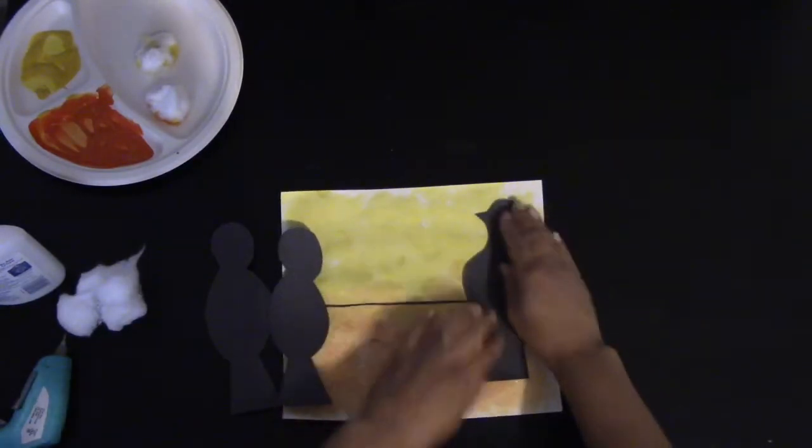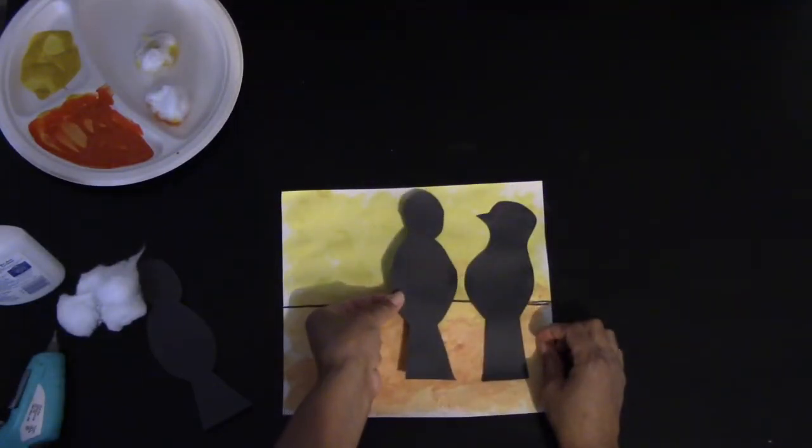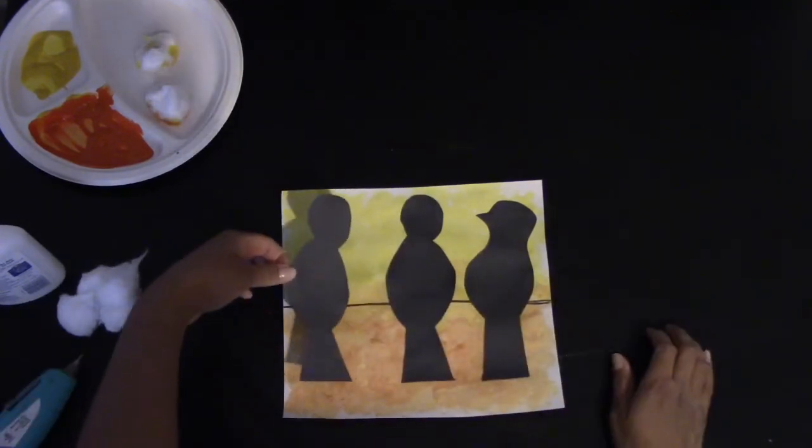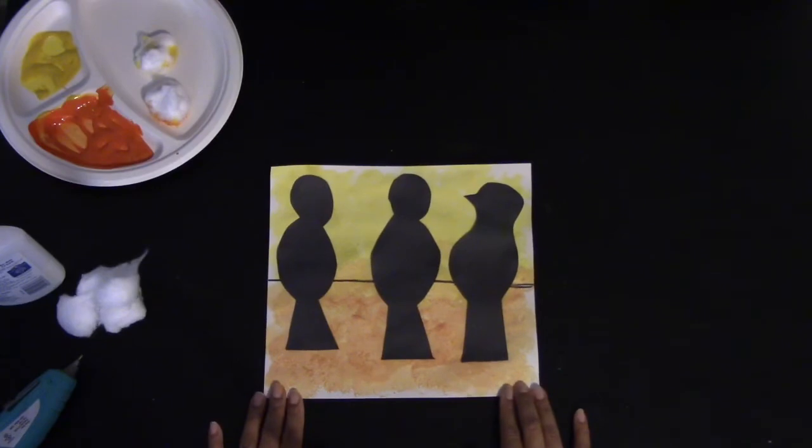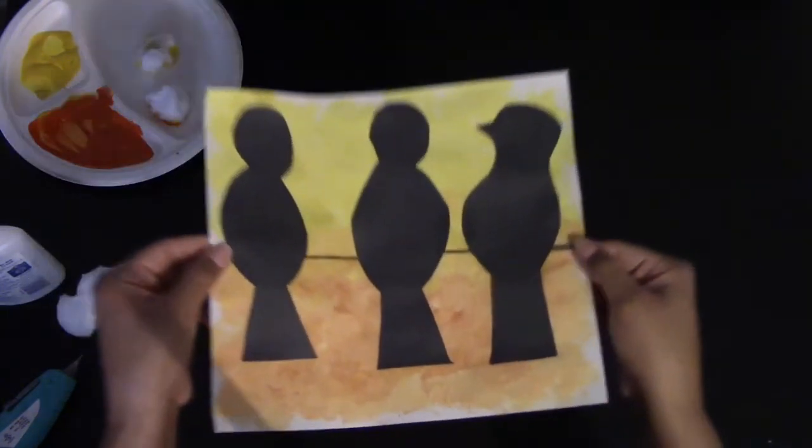Once you've figured it out go ahead and begin gluing them on. One by one. And there you have it. Your birds on the horizon.